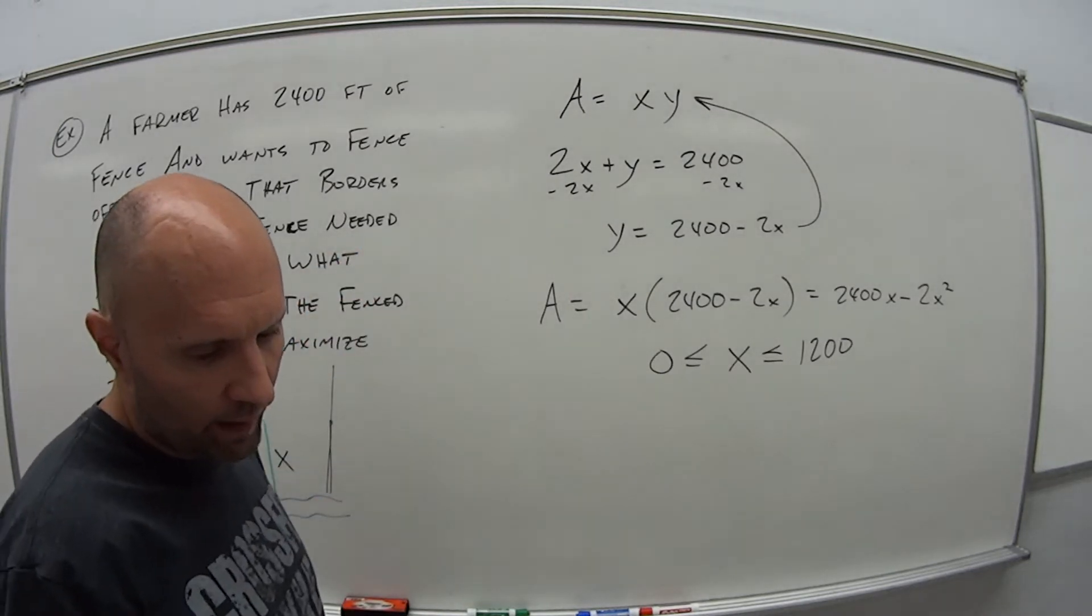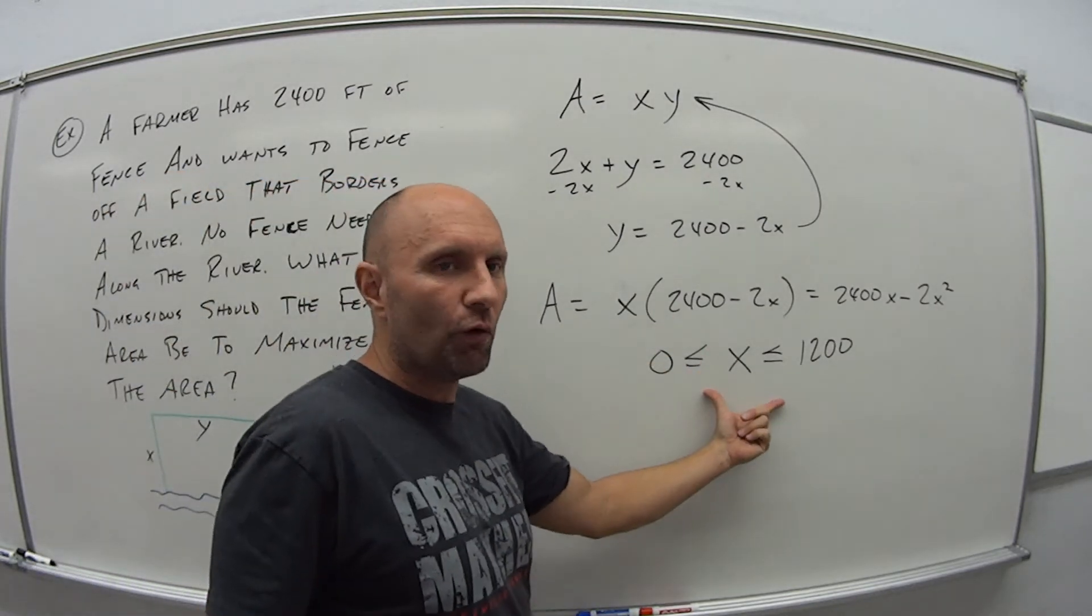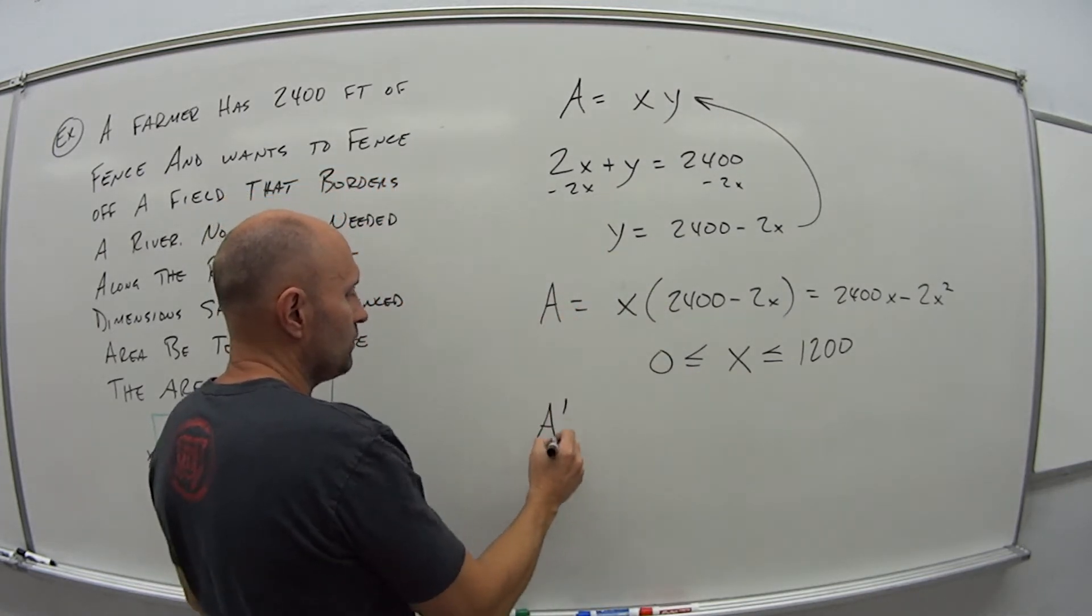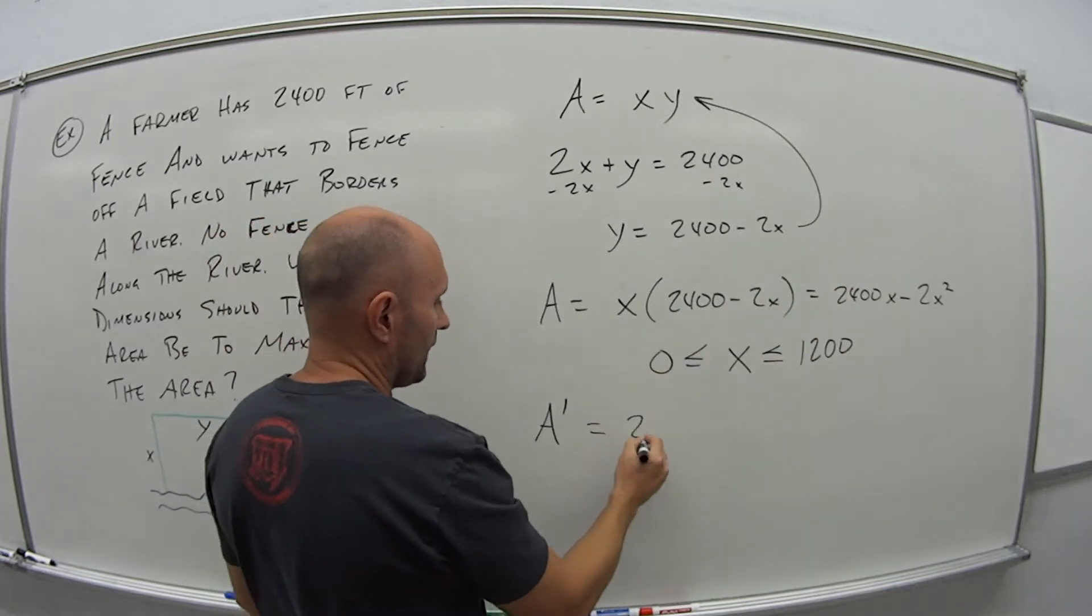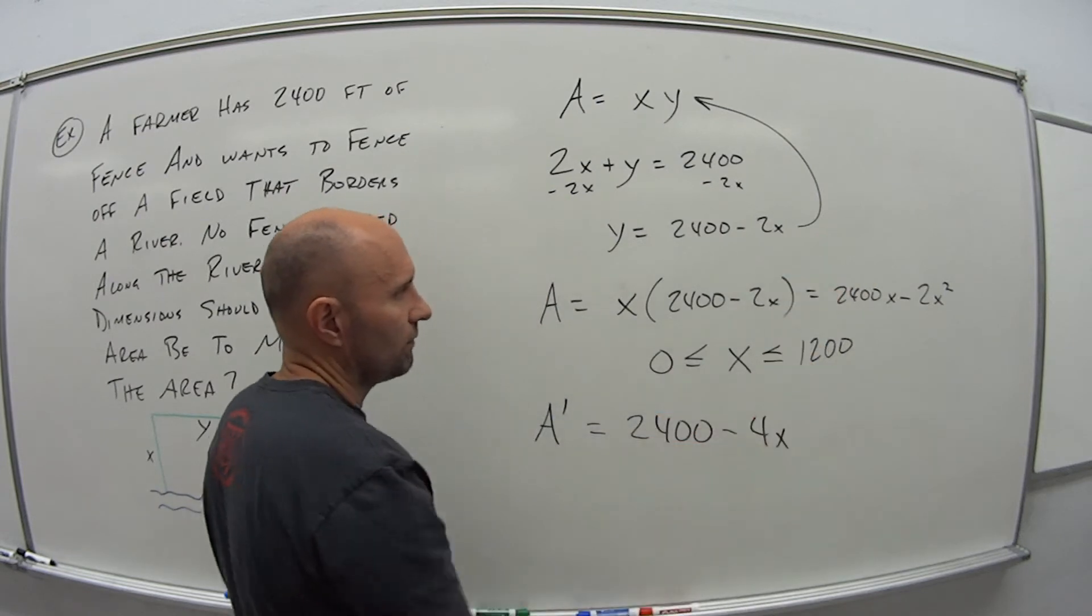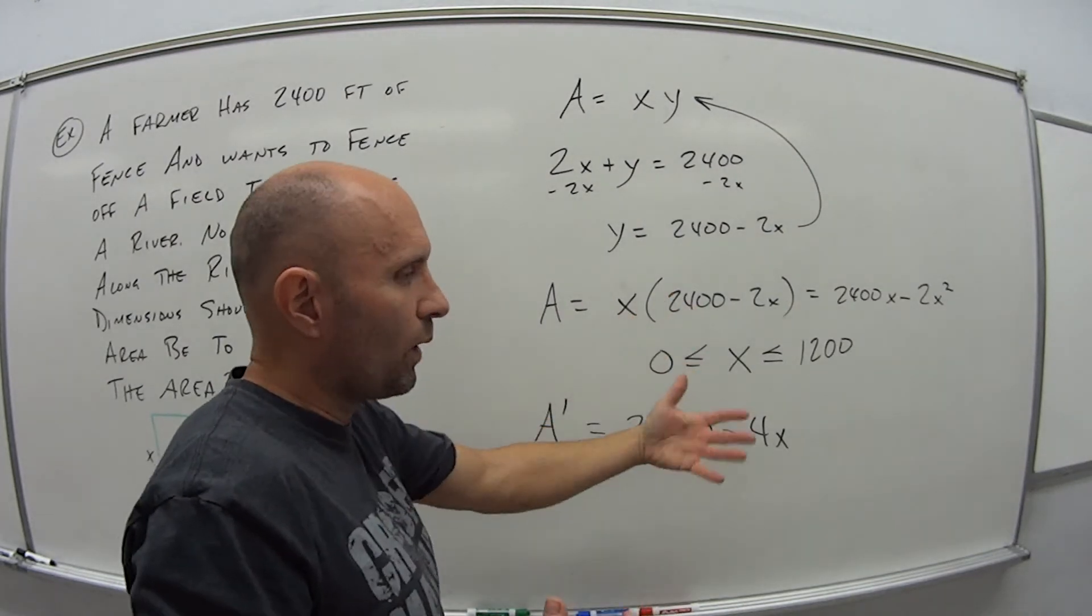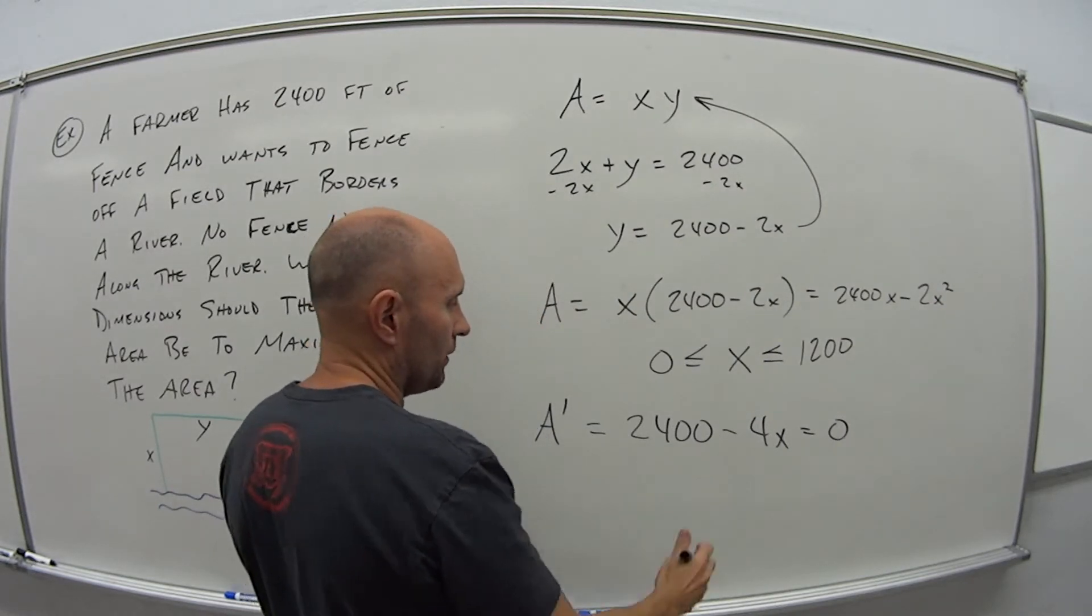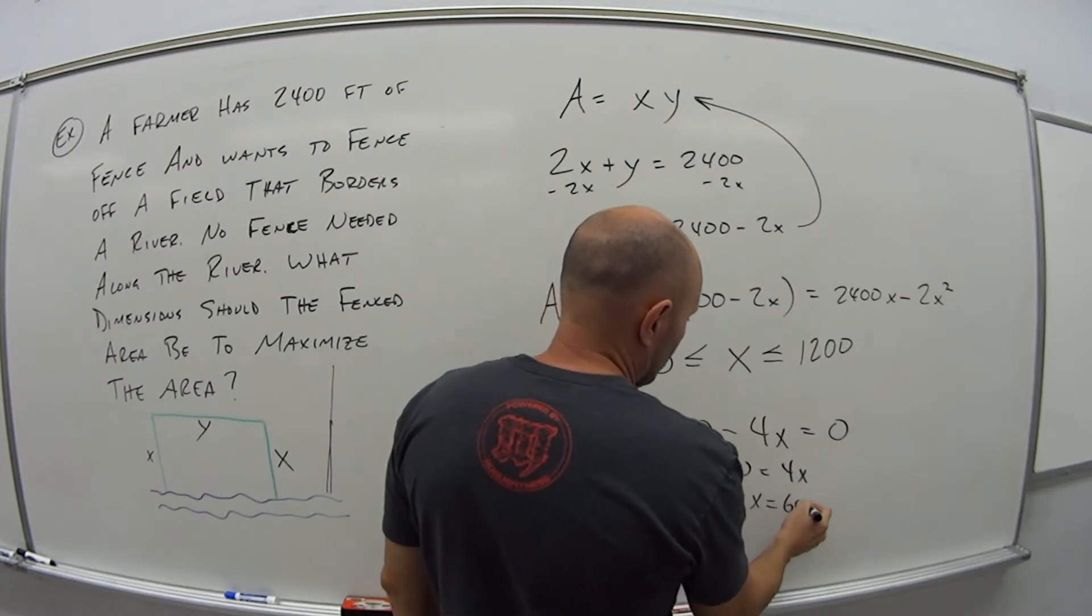So now, now I have that set. I have it as one equation. Now I can use, because it's a closed interval, 0 to 1,200, I can use the closed interval method. So in order for that, I'm going to need what? I'm going to need the derivative of A. So if I do that, the derivative of 2,400x is 2,400 minus 4x. I take the derivative of 2x squared, and I want my critical number. Because again, the critical number is where this could be a max or min. So that means this thing is equal to 0 gives me a critical number. So 2,400 is equal to 4x, which means x is 600.